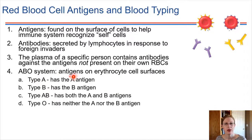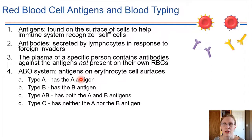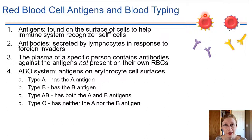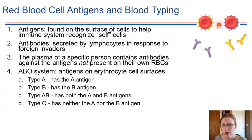If a person has blood with the A antigen — and by the way, antigen is just something that an antibody can recognize, a physical thing that an antibody can bind to — blood type A means that the person has red blood cells with the A antigen present on the surface. Blood type B refers to a person who has the B antigen present on the surface, a different type of carbohydrate.